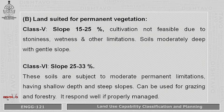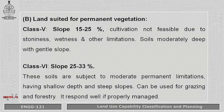Class 6 has a slope varying from 25 to 33 percent. As we proceed through the classes, slope is increasing. These slopes are subject to moderate and permanent limitations for cultivation, with very shallow soil depth and steep slope. The soil can be used only for grazing and forestry purposes if it is properly managed.